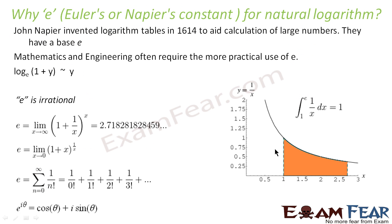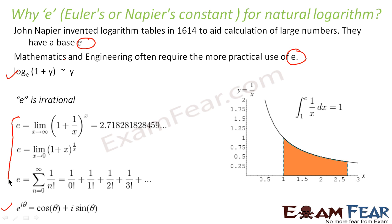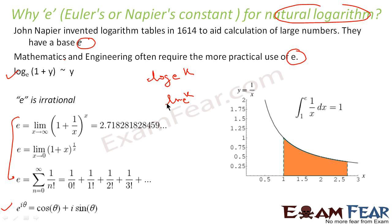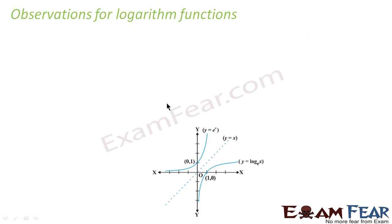To summarize: John Napier created a log table with base e, math and engineering grew, formulas involving log base e became extensively used, and e^(iθ) = cosθ + i sinθ gave e further prominence. With these developments, e gained special status, and natural logarithm — log to the base e — is called 'ln'.